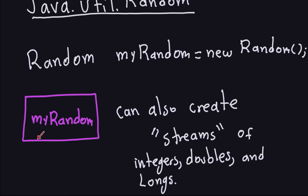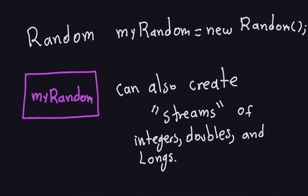This Random object can also produce what we call streams. Streams is a new feature of Java 8. It creates streams of integers, doubles, and longs, and sometimes that's very useful because it allows us to get rid of for loops, if possible.